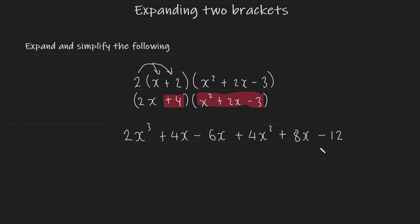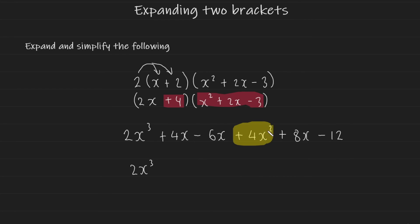Now we simplify this by collecting like terms, and we should have our final answer. Since we only have one term with an x cubed, I'm just going to go ahead and write down 2x cubed. I'm going to collect all of my terms with an x squared — I try to simplify in descending powers of x. So even though the x term is next, I'm going to find if there are any terms with a square. And there are — there's this plus 4x squared. So I'm going to write that down as my second term, plus 4x squared.